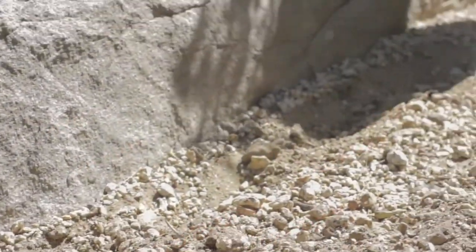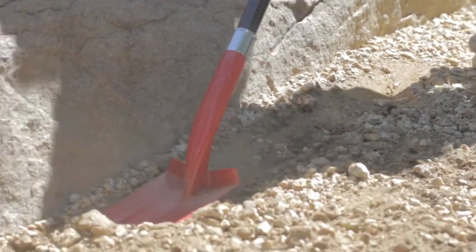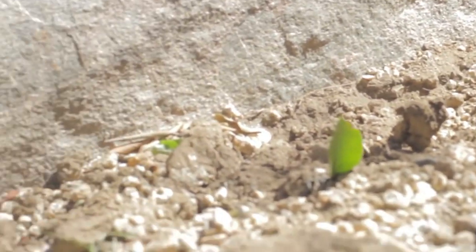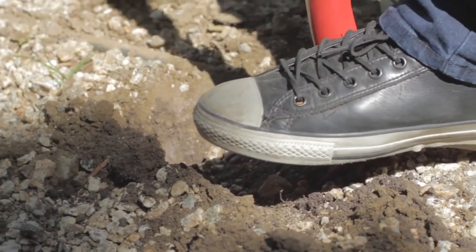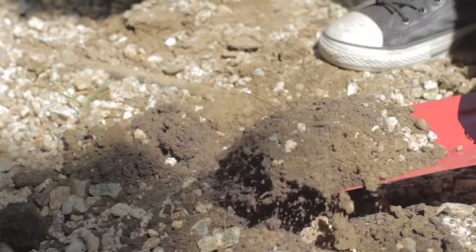First, dig a 4 to 5 inch, or 10 to 13 centimeter trench along the perimeter for running the speaker wires. Next, dig a hole for the subwoofer, leaving approximately 6 inches, or 15 centimeters, between the bottom of the mushroom cap and the ground.